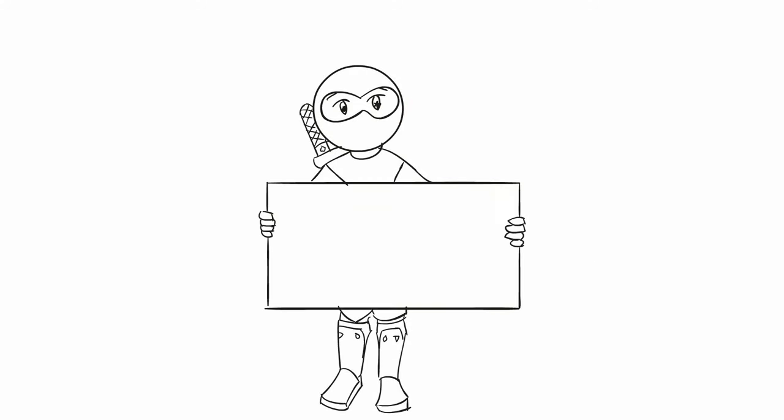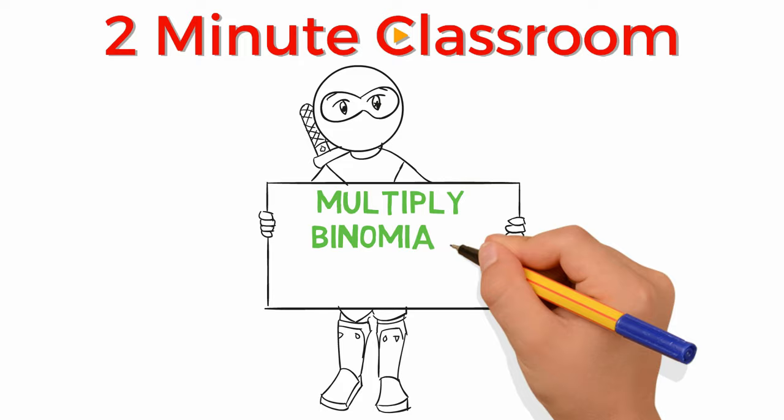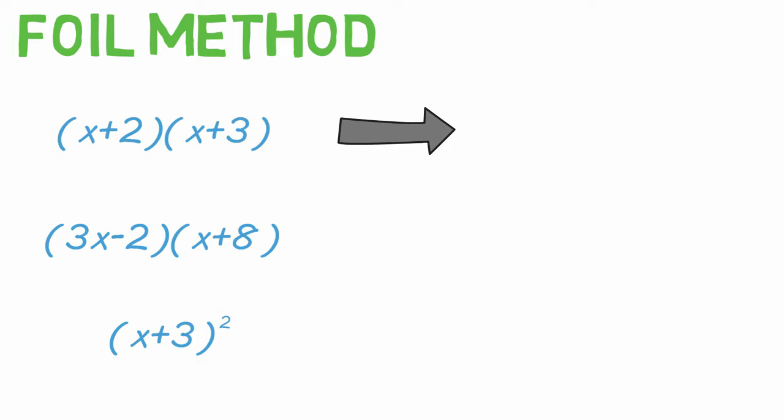Thanks for stopping by. This is Two Minute Classroom and today we're talking about how to multiply binomials like these using the FOIL method. You'll use the FOIL method to turn two binomials like these into their quadratic polynomial or standard form like so.